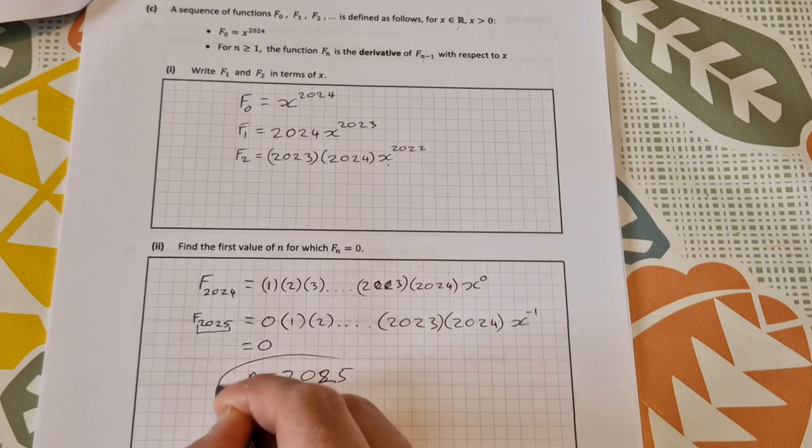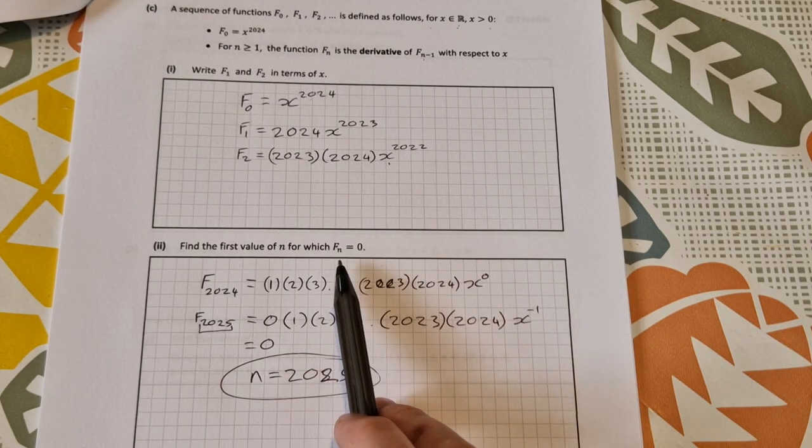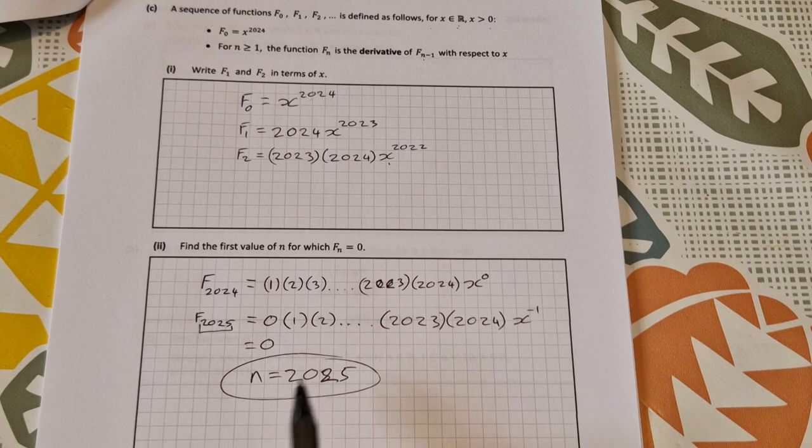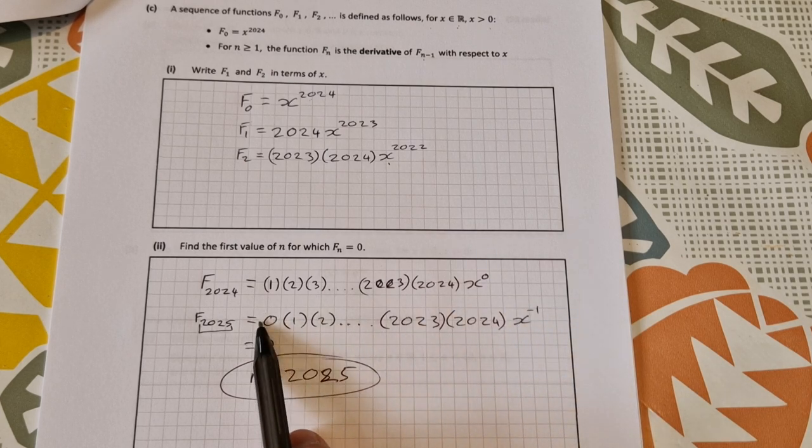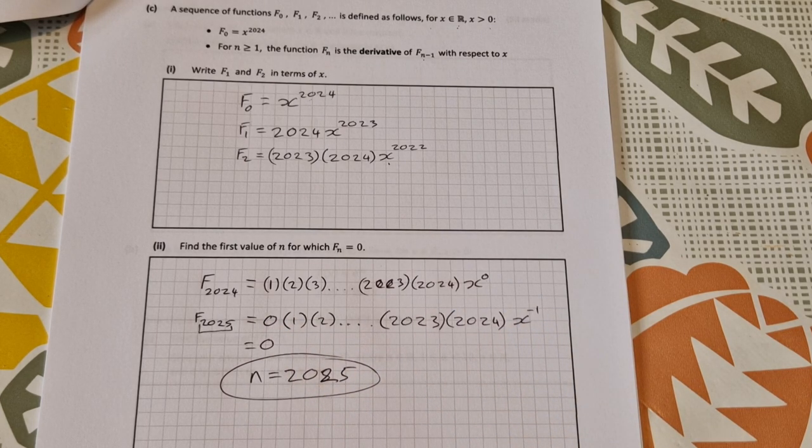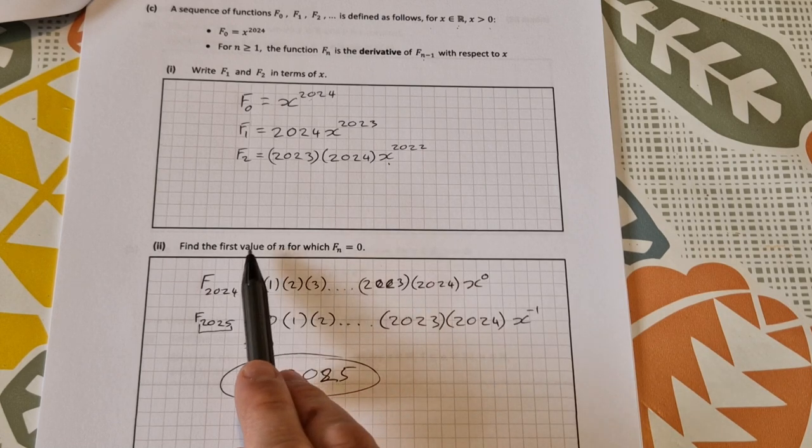So it's n equal to 2025 that is the first time when f of n is equal to 0. And in fact any one after that, it'll be equal to 0 because you multiply down by this minus 1, you still have the 0 in there, so every one after that is going to be equal to 0. This one is the first value.